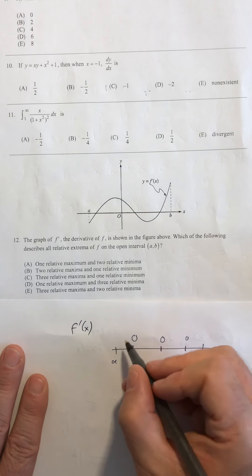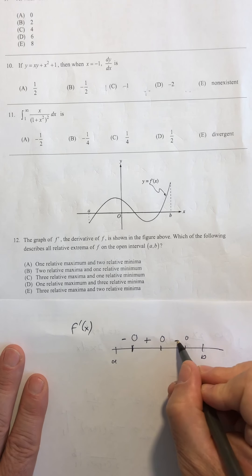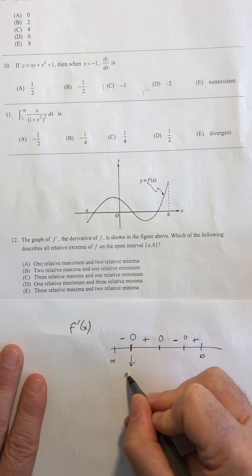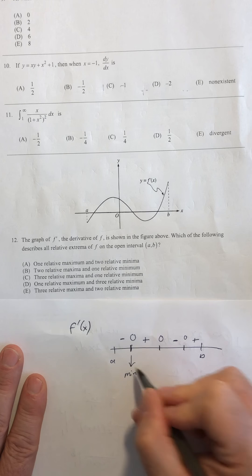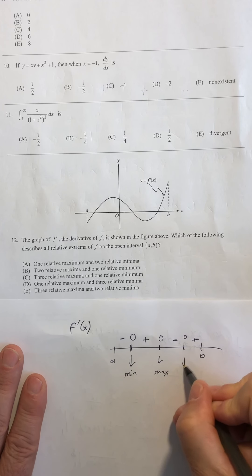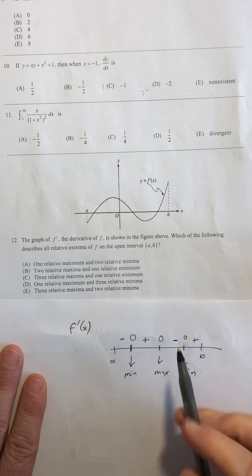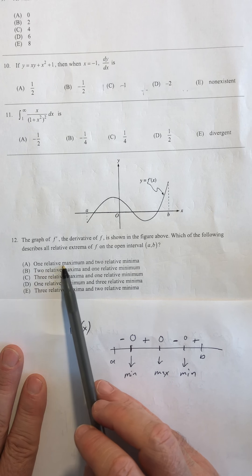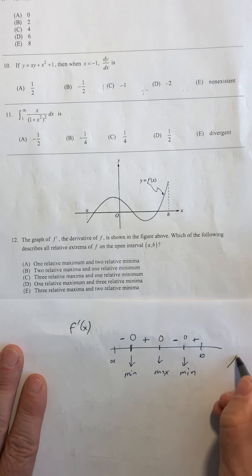Within those intervals, I have a negative derivative, a positive derivative, a negative derivative, and a positive derivative. And what I can conclude from that is that I have a relative min at this first point, a relative max, and then a relative min. So when I look through my options, I've got two mins and one max. One max and two min is answer A.